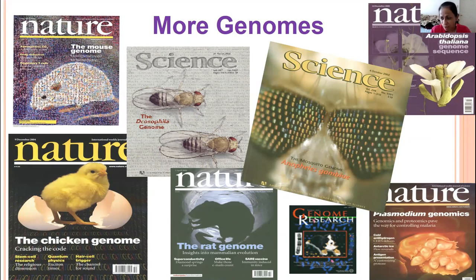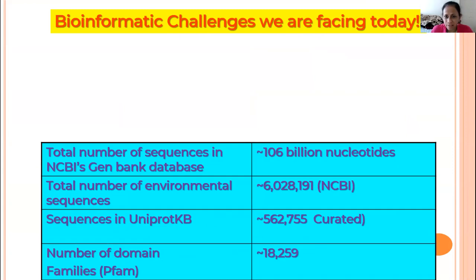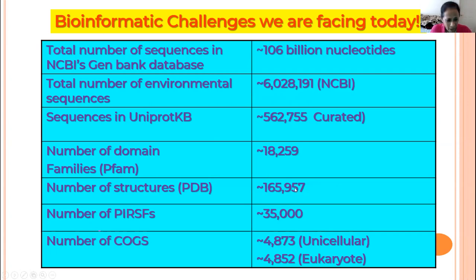Because we've sequenced so many genomes and have so many proteomes right now, it comes with a lot of different challenges. The number of sequences is exploding — we have 106 billion nucleotides, and more than 6 million data points from environmental sequences alone. We have lots of data in the UniProt knowledge base, which we're going to talk about and which you'll have lots of hands-on experience with. From the sequences, we have domains, three-dimensional structures, protein families, clusters of orthologous groups, and all of those things. And that's just talking about proteins and DNA — not even other data sources like medical electronic health records.